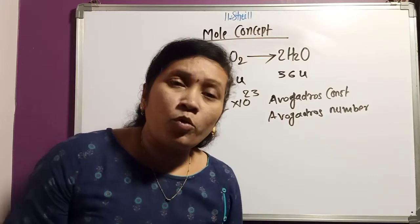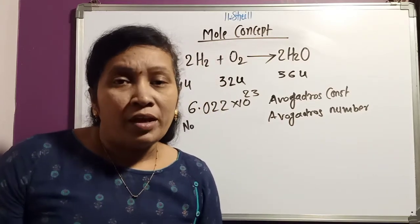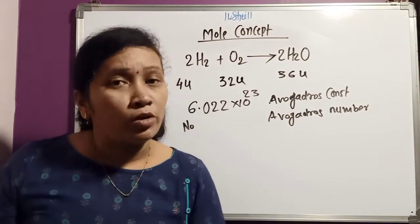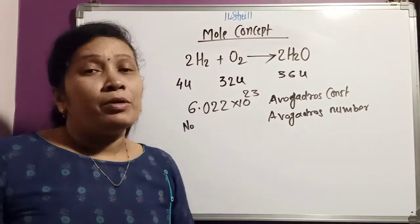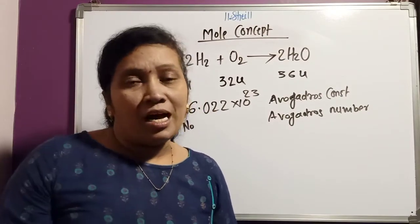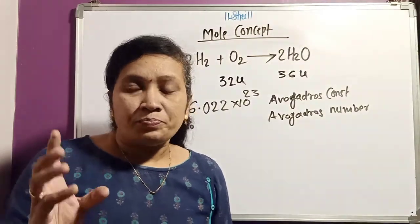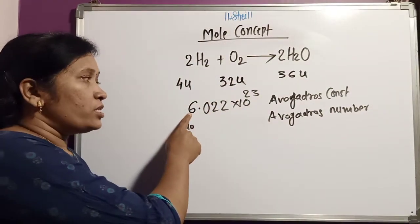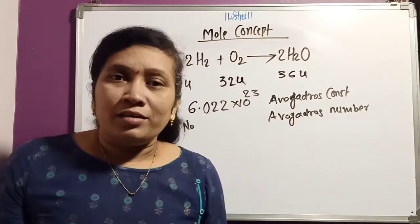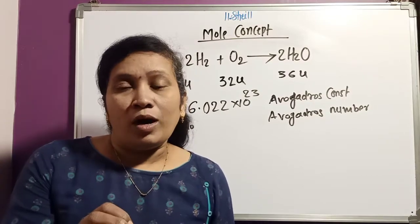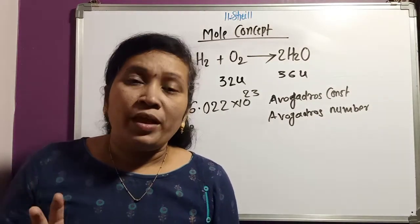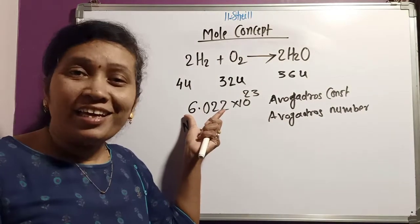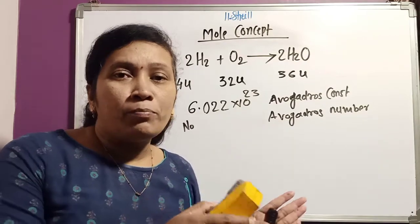So how do we use this in chemistry? What connection does this number have with our atoms, molecules, nuclei, or ions? There is no difficulty here. Take any substance — if you take 1 mole of carbon, then you will get 6.022 × 10²³ atoms of carbon. This same number applies to any substance. Take 1 mole of any substance — how many atoms, molecules, or ions will be there? Exactly this many: 6.022 × 10²³. For this, I will show you a flow chart or block diagram.